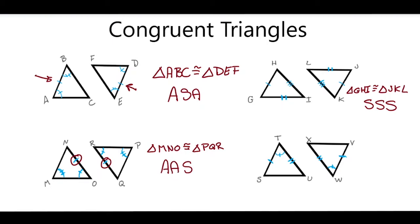And in our bottom right corner, I have two triangles. I have triangle STU, and I'd say that that is congruent to triangle VWX. Notice that there are two sides in each triangle that are congruent, and the angle between those sides is congruent. So, I would say that this is side, angle, side.